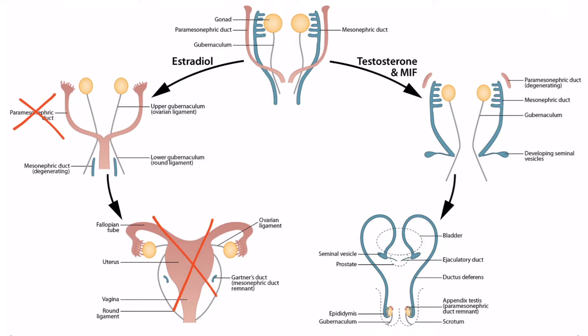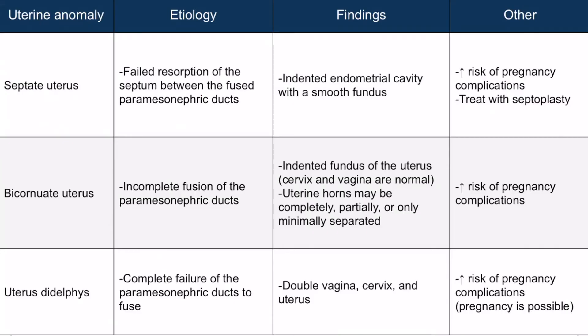Sometimes the paramesonephric ducts are present but just don't develop properly. If this happens, then the patient can develop uterine anomalies. There are three uterine anomalies you need to be familiar with for Step 1: a septate uterus, a bicornuate uterus, and a uterus didelphys.